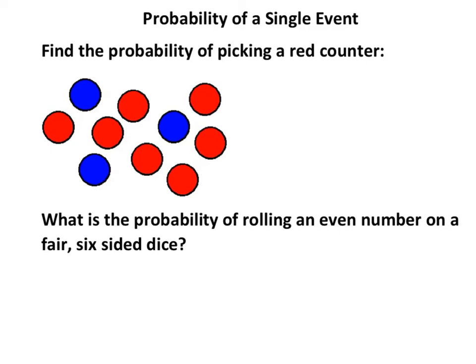So if we look at these two problems, it says find the probability of picking a red counter. We need to count how many red counters there are, and we're going to do this as a fraction. How many red counters are there? One, two, three, four, five, six, seven. And there's ten counters altogether. So there are seven reds.